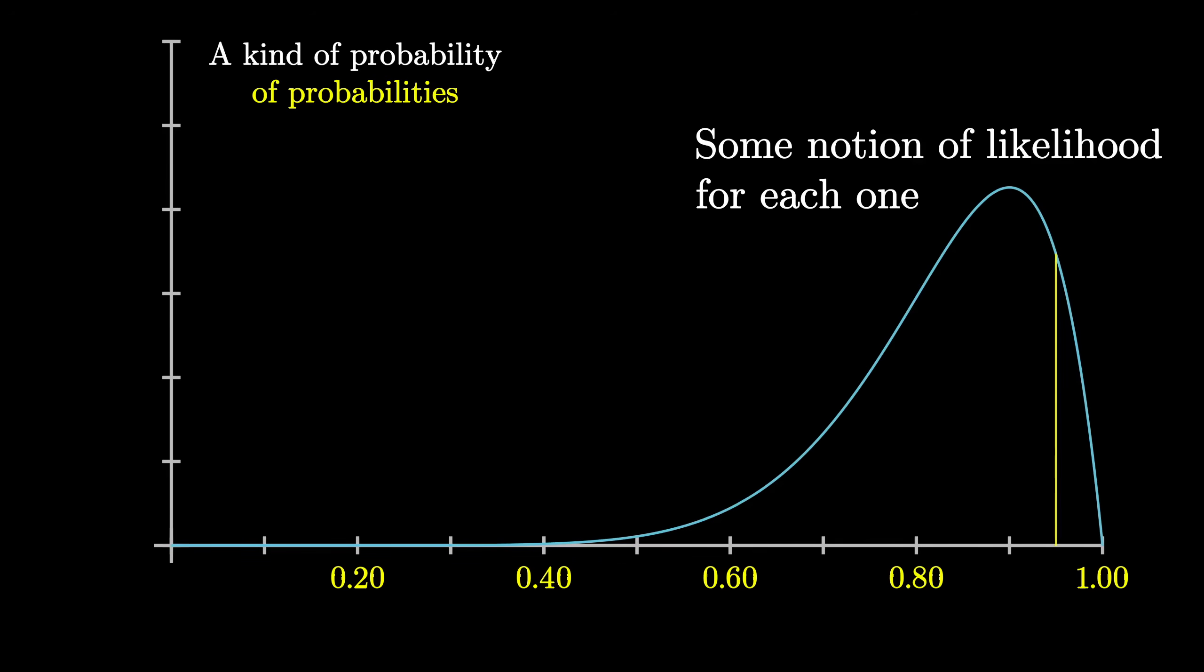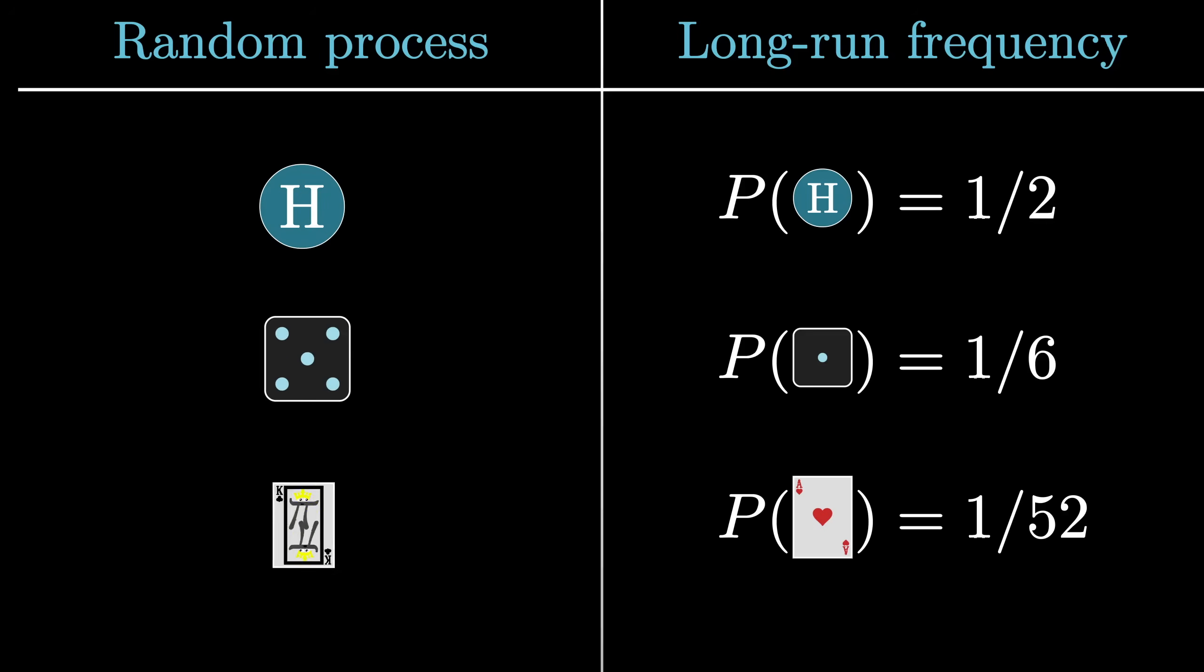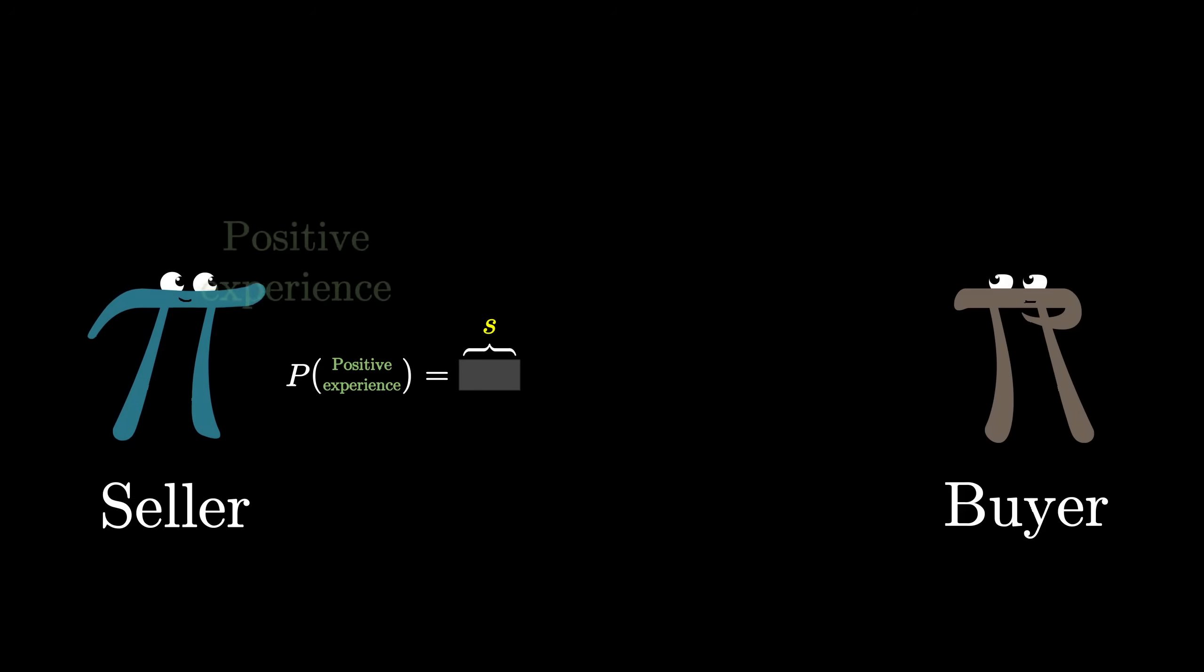Unlike the more gamified examples, like coin flips and die tosses, and the sort of things you see in an intro probability class, where you go in assuming a long run frequency, like 1 half or 1 sixth, what we have here is uncertainty about the long run frequency itself, which is a much more potent kind of doubt.